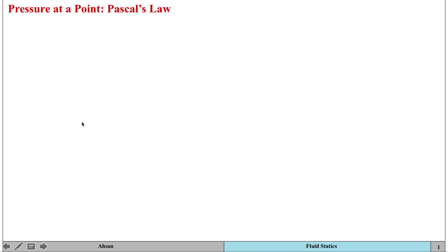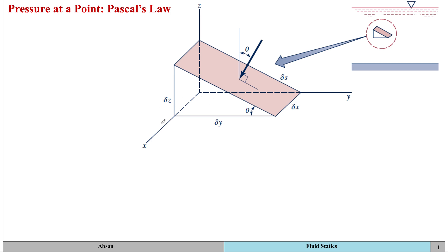To answer that question, let's take a small fluid element from within a container. This fluid element is wedge-shaped — a triangular prism. I'll explain why we chose this shape after the analysis. It extends in the x, y, and z directions. Because it's a small differential element, the x-dimension is delta x, the y-dimension is delta y, the z-dimension is delta z, and the slanted dimension is delta s.